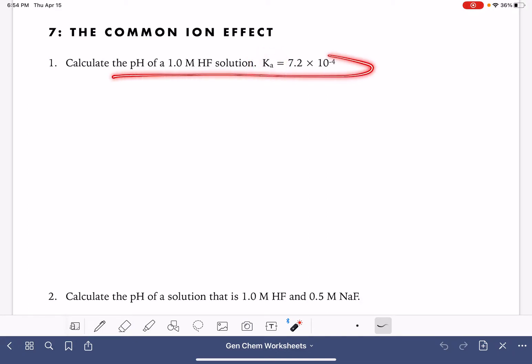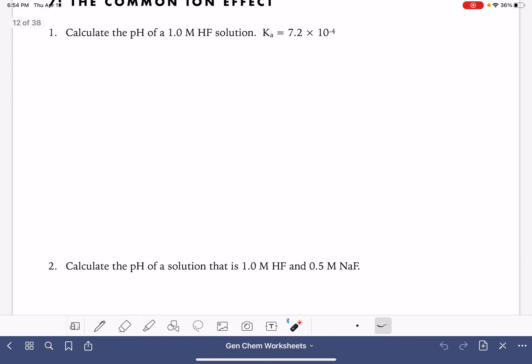And this is just a straightforward weak acid pH calculation. It has nothing to do with common ion. And then what we're going to do in the second problem is recalculate the pH of that solution assuming that we have 0.5 molar sodium fluoride that's been added to the solution. So this gives us a common ion in the solution, and it's going to give us a chance to see how the presence of the common ion affects the pH of solution.